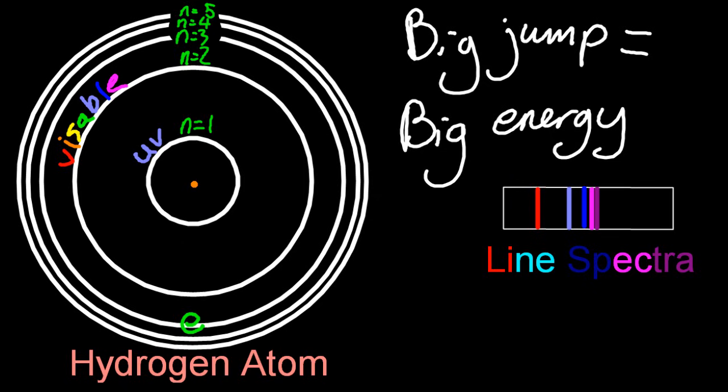And any electron that jumps back to the n equals three, well that's a much smaller jump than the previous two. So that's going to be a smaller jump, smaller energy. And what's lower energy than visible, that's going to be infrared. And that's as much as the IB wants you to know. Jumps to the n equals one, n equals two, and n equals three level.